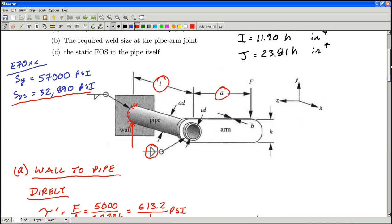For the weld between the arm and the pipe, first off, just think real quick about the forces in play. That force here is still offset by distance A, so the torque still exists. The section properties for J are different. They're essentially doubled, so that's going to change the stress, but the torque is still there. That direct shear force is also passing through this.